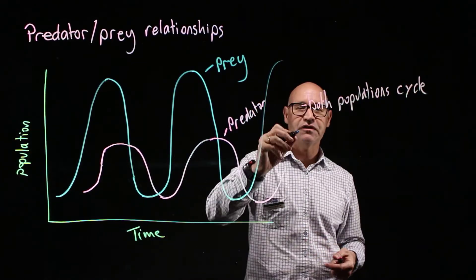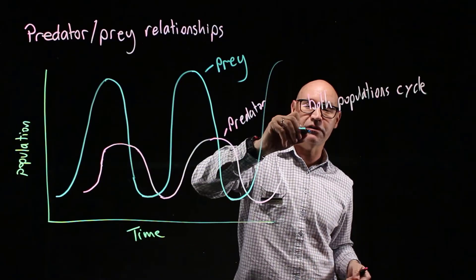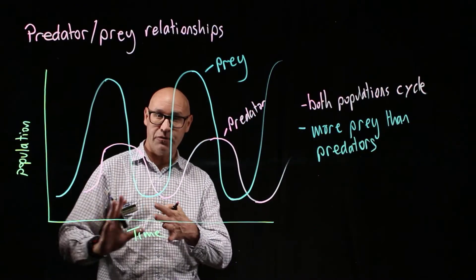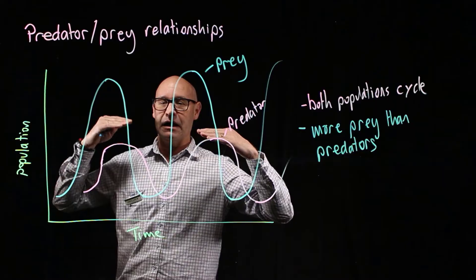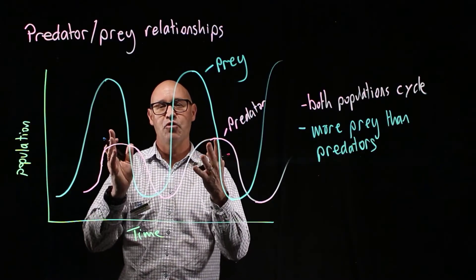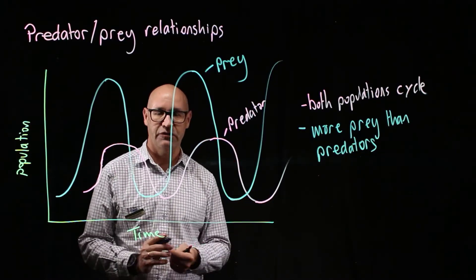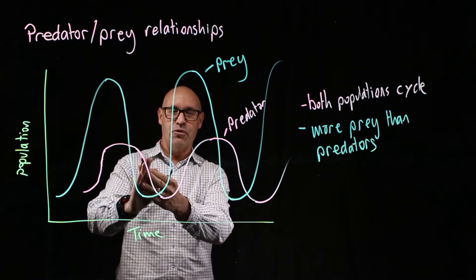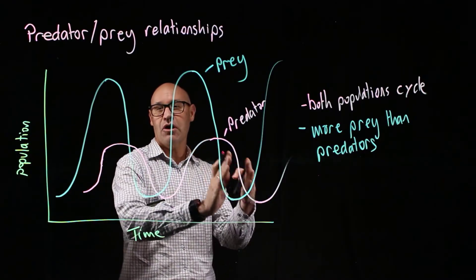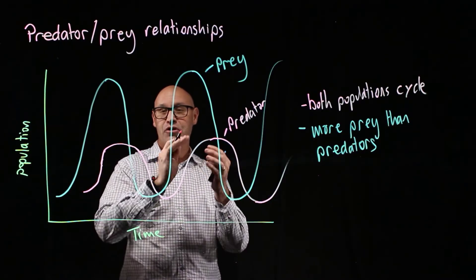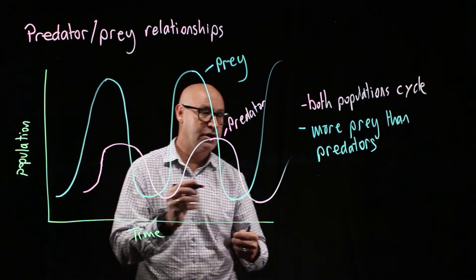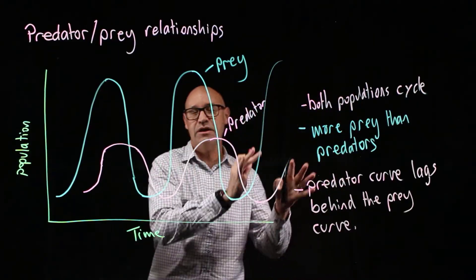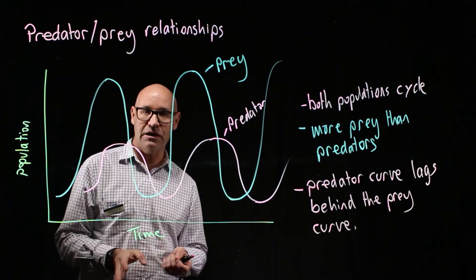The next thing I want you to see is that there's more prey than there are predators. The reason for that is that energy flow through the ecosystem is inefficient, so an ecosystem must have more prey organisms than predator organisms. The third thing I want you to see is that the curve for the predators actually lags behind the prey, because its population is dependent on the population of the prey. Those are the three things you need to remember about the predator-prey curves.